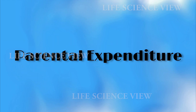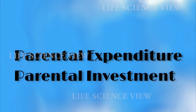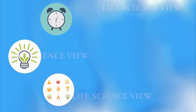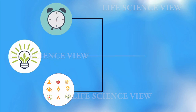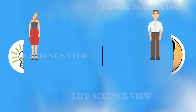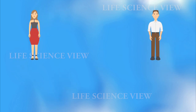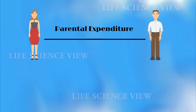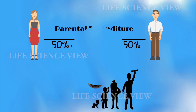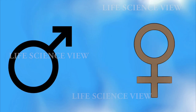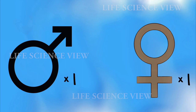The principle was based on parental expenditure. Parental expenditure, or parental investment, is any expenditure like time, energy, or resources which benefits the offsprings. According to Fisher, both the male and female contribute equal parental expenditure to reproduce and raise their offsprings, and for that, a sex ratio of one is to one should be maintained by the mating pair or parents.